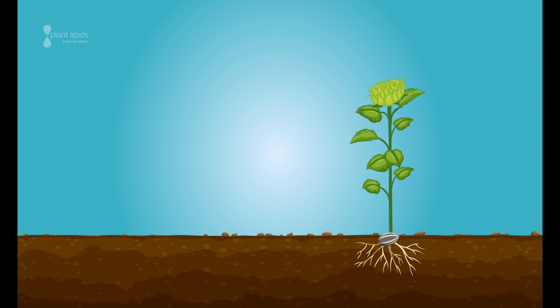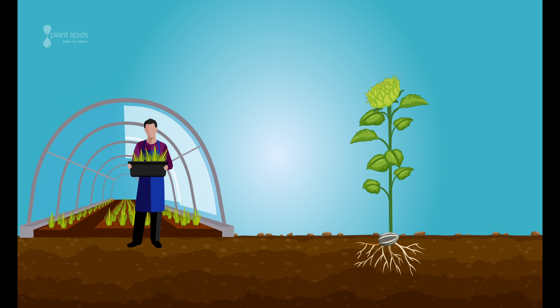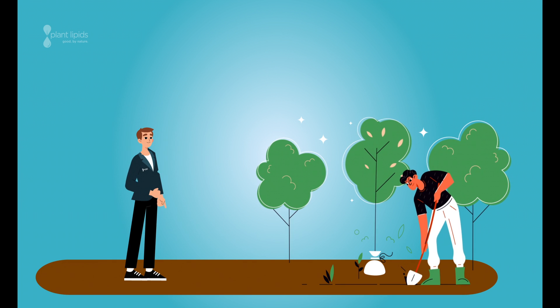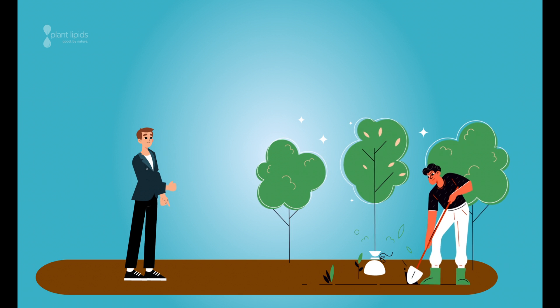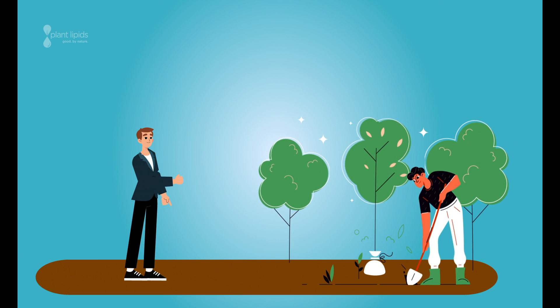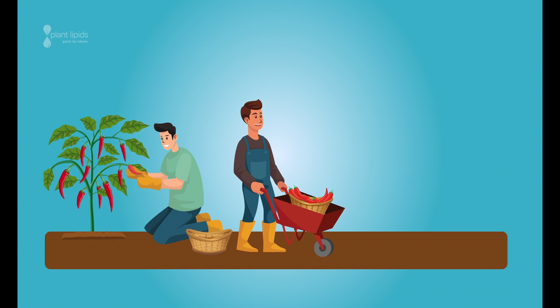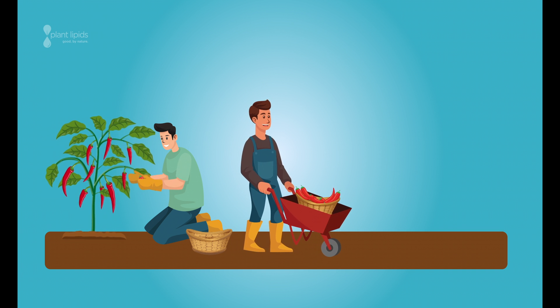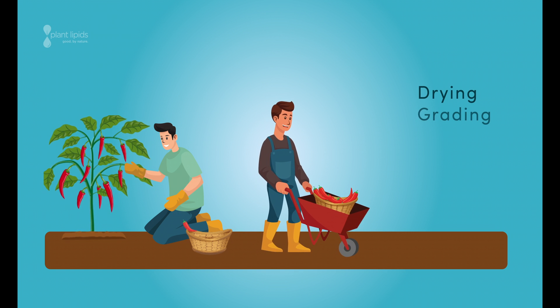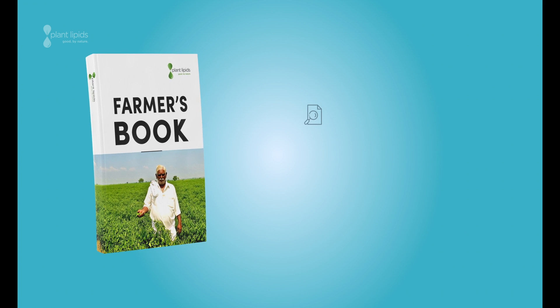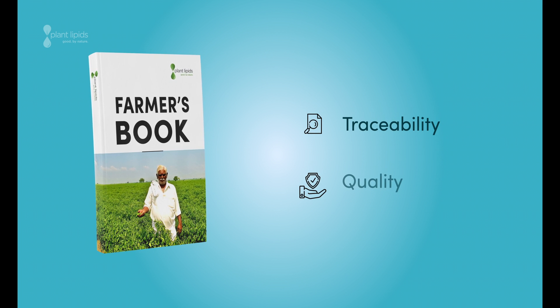The seeds are planted under a controlled environment to nurture them in their initial stage and then replanted. The farmers ensure pest management and weed management by approved methods in the presence of our team. The matured crops are then harvested by the farmers and sent for post-harvesting activities including drying, grading, and bagging. The farmer's booklet ensures traceability throughout the cultivation process and ensures that the quality is not compromised.